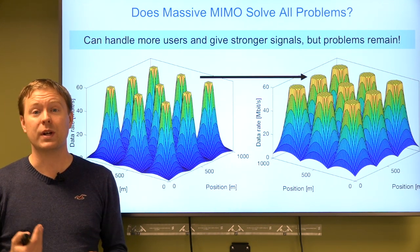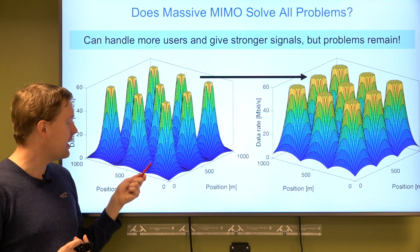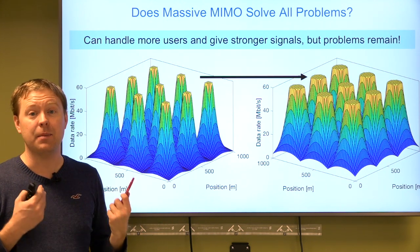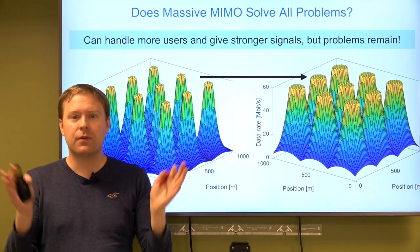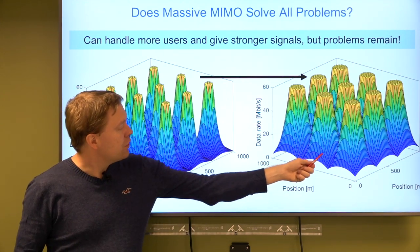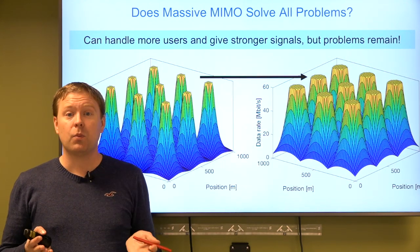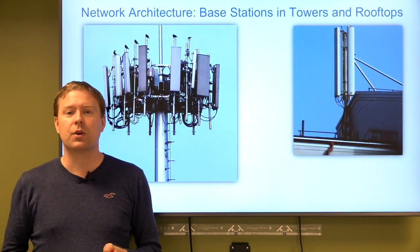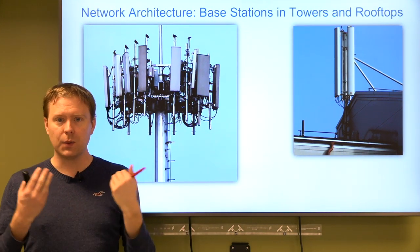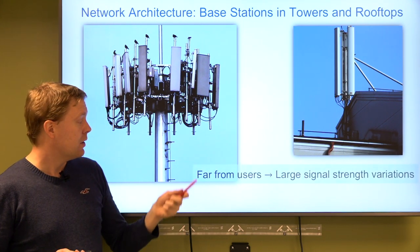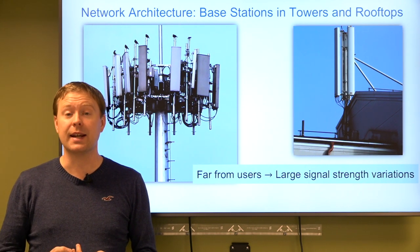As users move away from the base station they get weaker signals and lower data rates. Users that are equally far from multiple base stations are at cell edges and get the worst performance. With massive MIMO we can improve performance for everyone — cell-center users benefit from more directive signals, and cell-edge users also improve — but there are still large variations we cannot do much about. The reason is that the wireless network architecture has been based on placing base stations in tall towers or on rooftops, so they are naturally far from users.